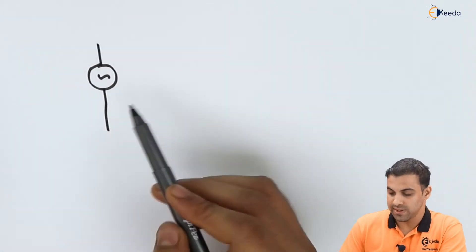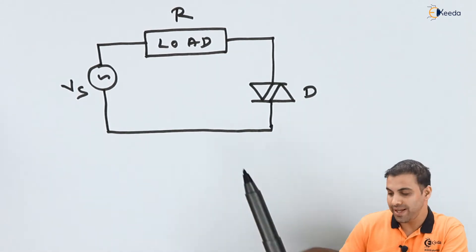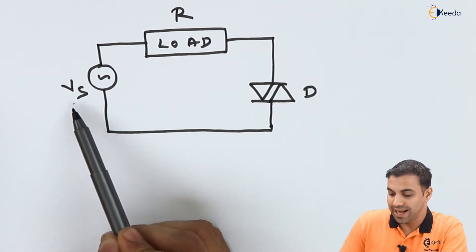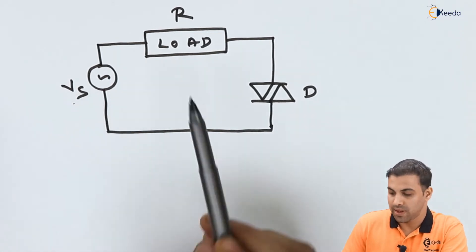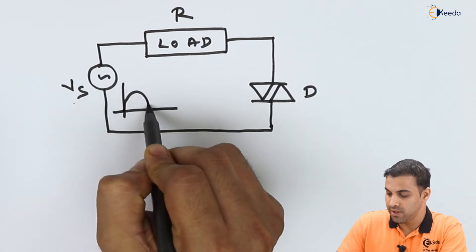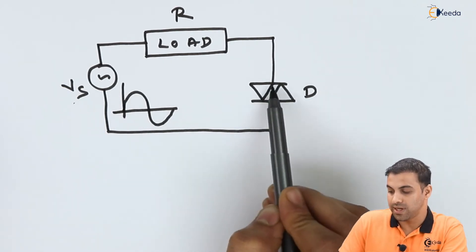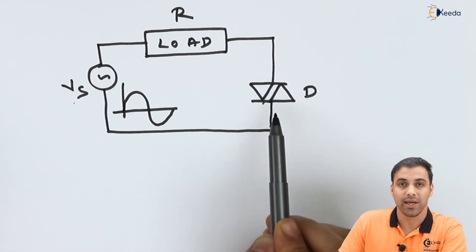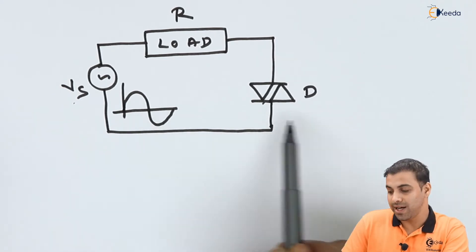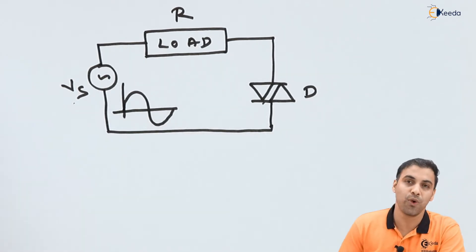Let's draw the circuit diagram which involves a DIAC. Let Vs be the sine voltage source, R be the load, and D be the DIAC. The sine voltage source looks like this as we all know. During the positive half cycle, one diode in the DIAC is forward biased and it will conduct. During the negative half cycle, the other diode will be conducting, so we get the circuit conducting during both half cycles.